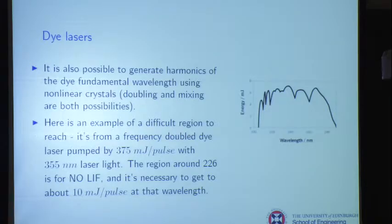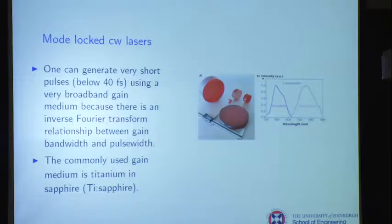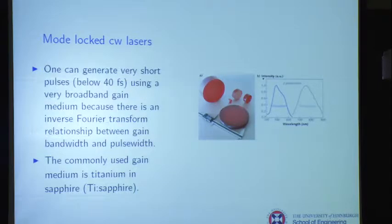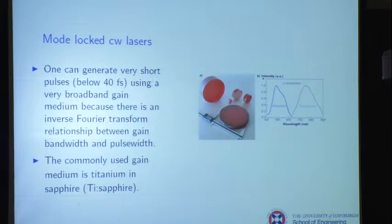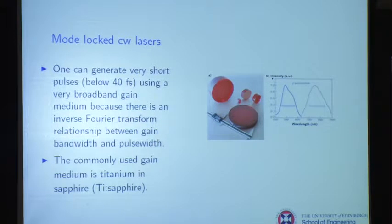Modern dye lasers can get you above 10 millijoules per pulse. You can make very short pulses — well below 40 femtoseconds nowadays. You need a broadband gain medium. Here's titanium sapphire: the titanium in sapphire has a four-level system and is extremely broadband. The ruby lasers used chromium in sapphire; the titanium has a four-level system. The fluorescence of Ti:sapphire goes from about 650 nm up to around 900 nm, and we're going to use all of it if we can.